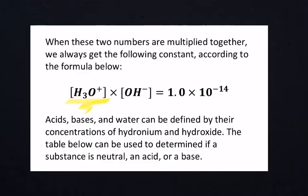We can use these numbers to figure out relative amounts of concentrations of H3O+ and OH-. When these two numbers are multiplied together, we get a constant according to this formula: H3O+ times OH- always equals 1 times 10 to the negative 14th.